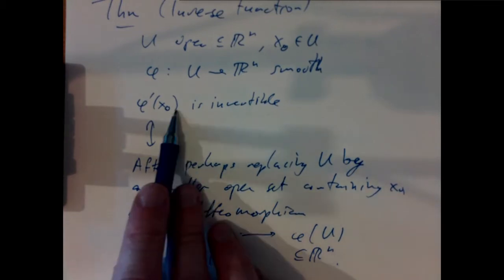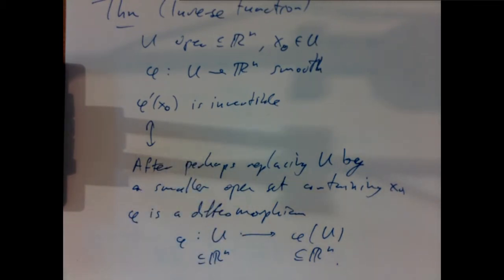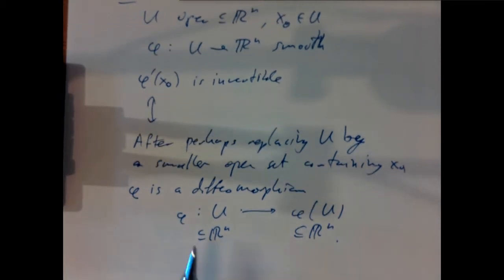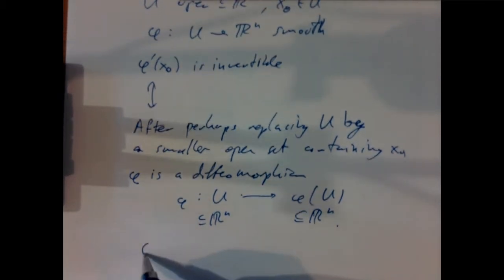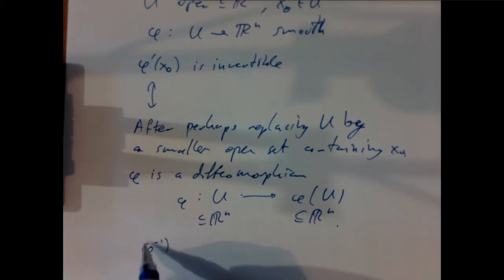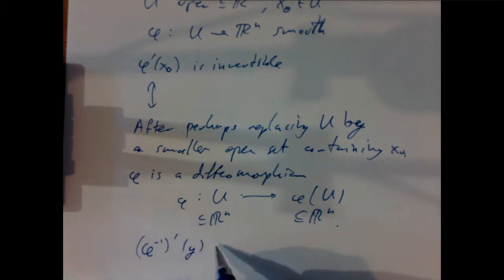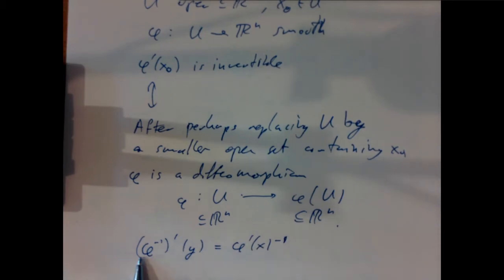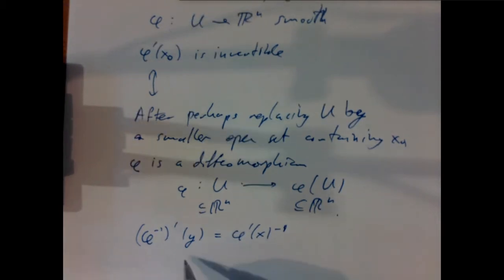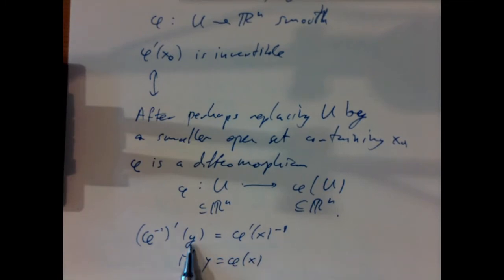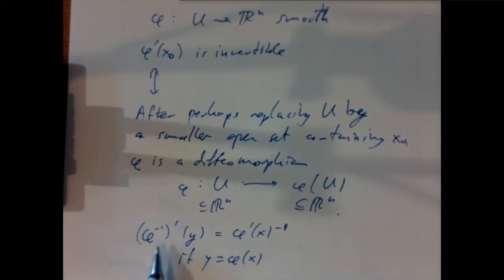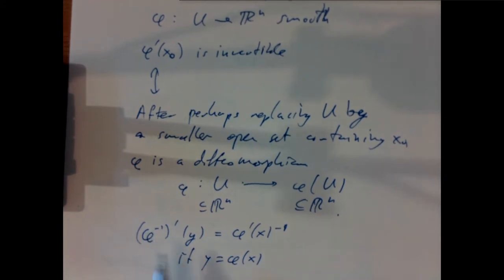Moreover, the inverse function theorem also tells us how to calculate the inverse. If φ has an inverse, then (φ⁻¹)′(y) = [φ′(x)]⁻¹, where y = φ(x). On one side we're inverting the map φ; on the other side we're taking the matrix φ′(x) and inverting it. This lets us calculate the derivative of the inverse map without knowing the inverse map explicitly.